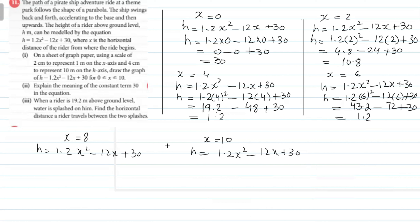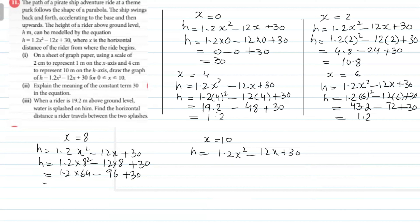اسی طریقے سے x = 8 کے لیے: 1.2(8²) − 12(8) + 30 = 1.2(64) − 96 + 30 = 76.8 − 96 + 30۔ تو یہ answer آجائے گا 10.8۔ تو h کی value 10.8 form ہوگی۔